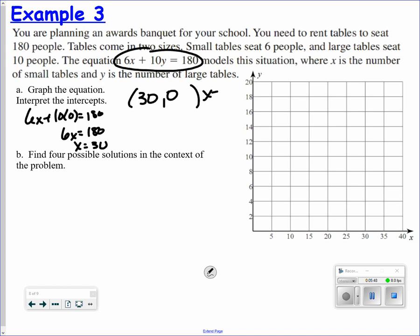This would be the x-intercept. Put 0 in for x and solve. I'm going to skip ahead and it's 18. So I'm going to graph those. (0, 18) is the y-intercept. (30, 0) is the x-intercept. And I connect the dots. Find four possible solutions in the context of the problem.